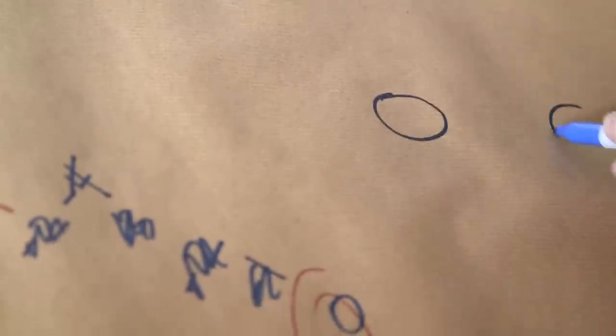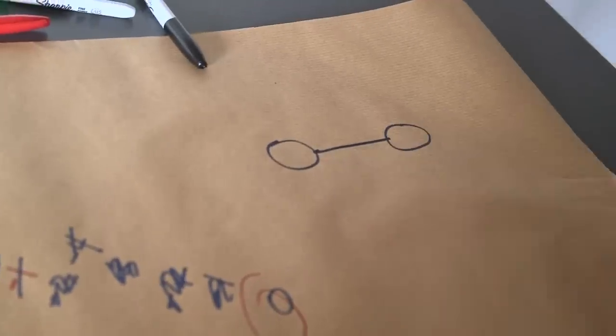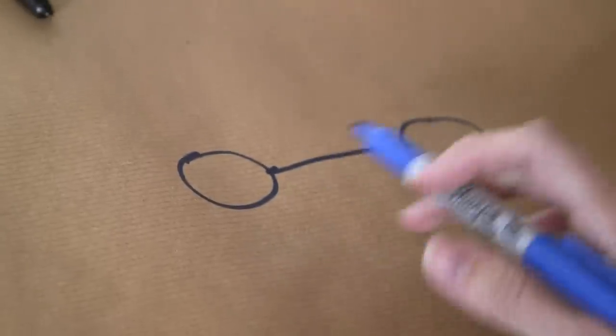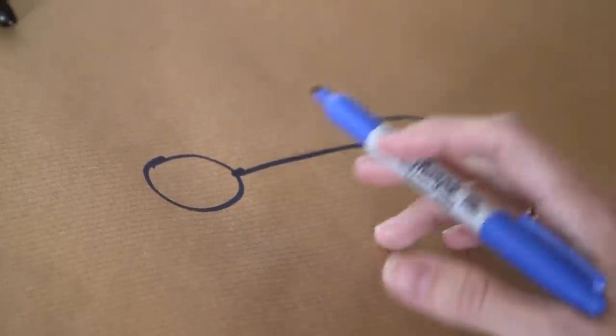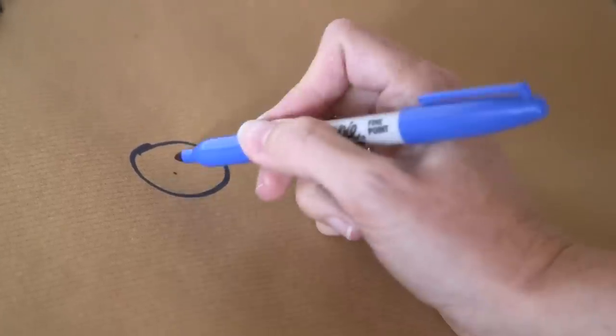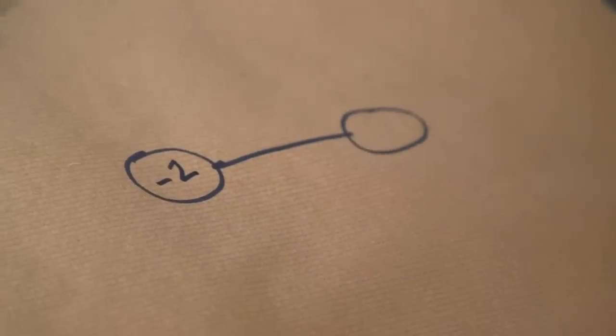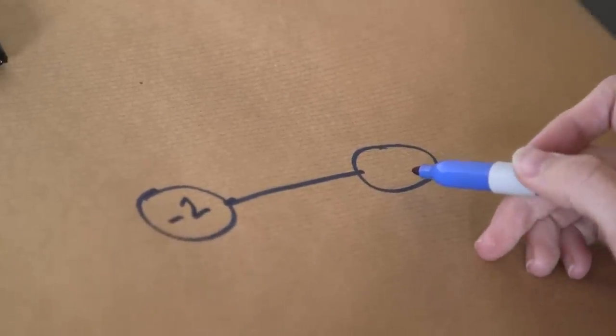So there are obviously some constraints for when you can win this game. So let's do a slightly simpler version. So let's say we just have two vertices and we'll connect them by an edge. Now my question is, what kind of money can I put into this game to make it possible to win? So for example, if I have minus two here, let's say, what numbers will work over here to make it a winnable game?